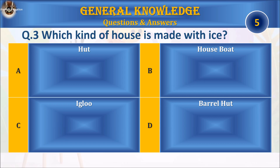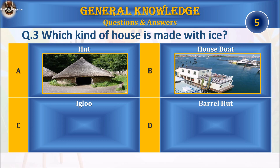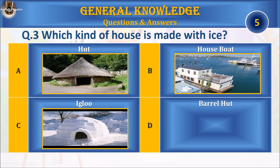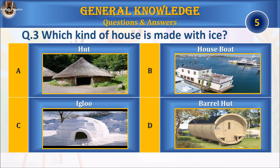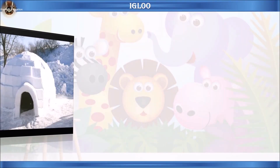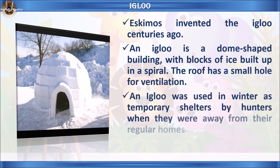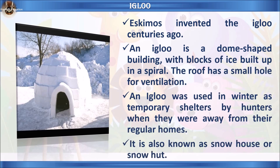Question 3. Which kind of house is made with ice? A. Hut, B. Houseboat, C. Igloo, or D. Barrel Hut? Your time starts. The answer is C. Igloo.